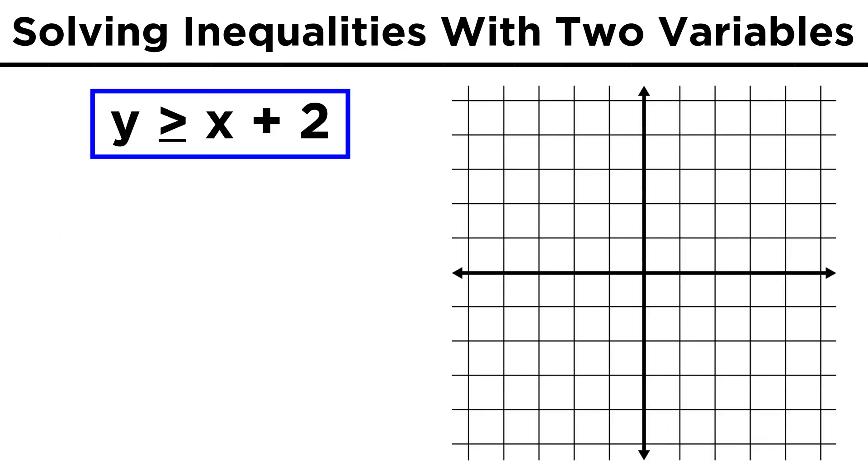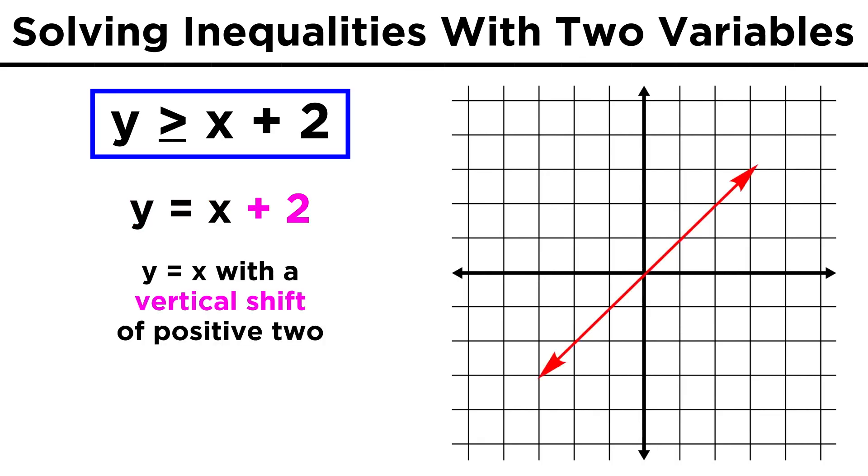When polynomial inequalities contain two variables, like y is greater than or equal to x plus two, these become interesting to graph. When we do this, the first step is to treat this inequality as though it were an equation, so y equals x plus two. As we should know at this point, this will just be the line y equals x but shifted up two, given this vertical shift term here.